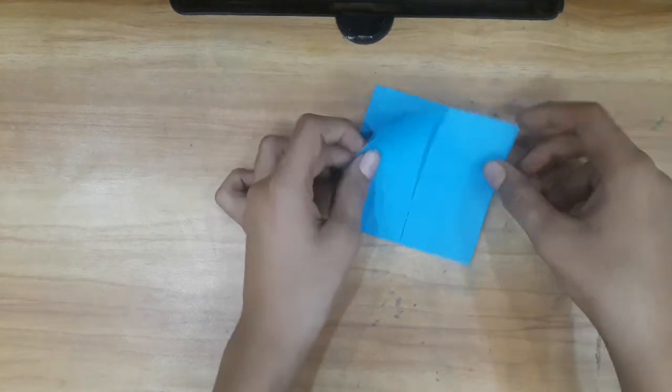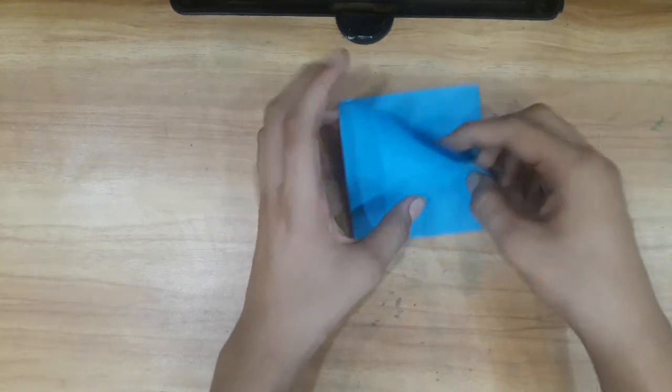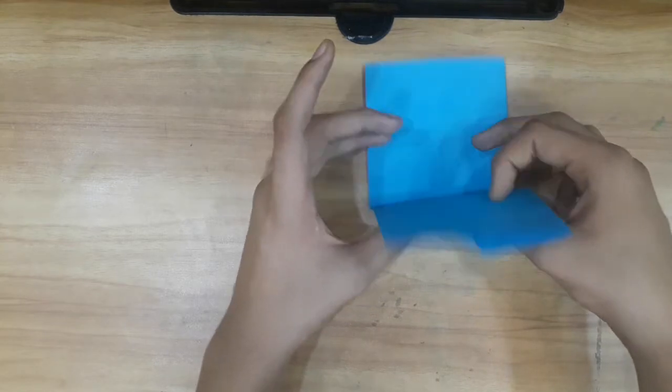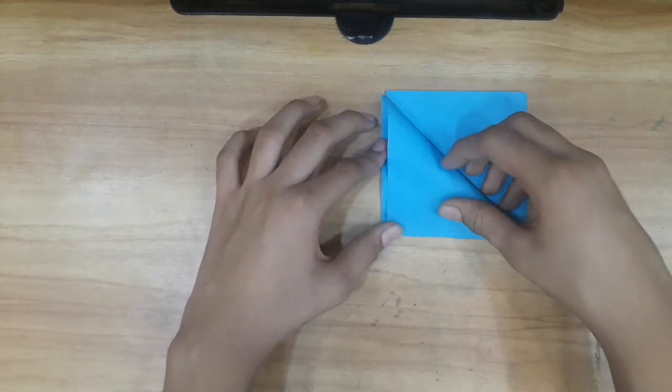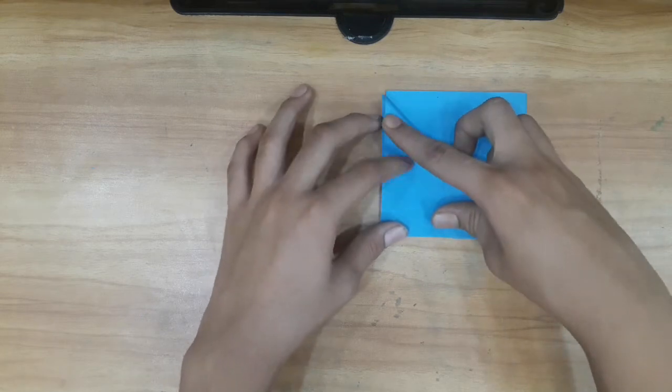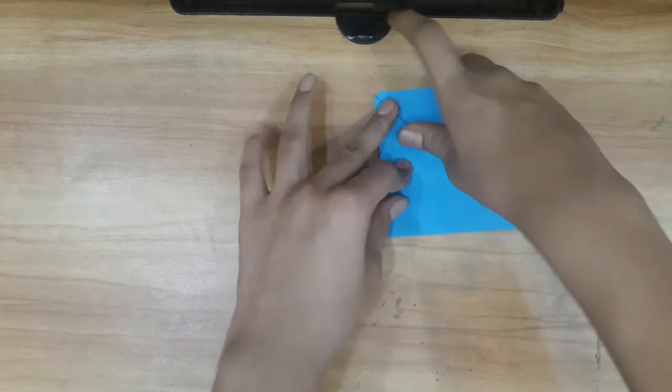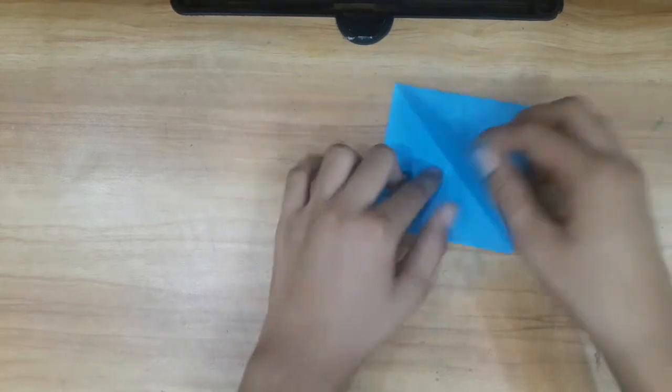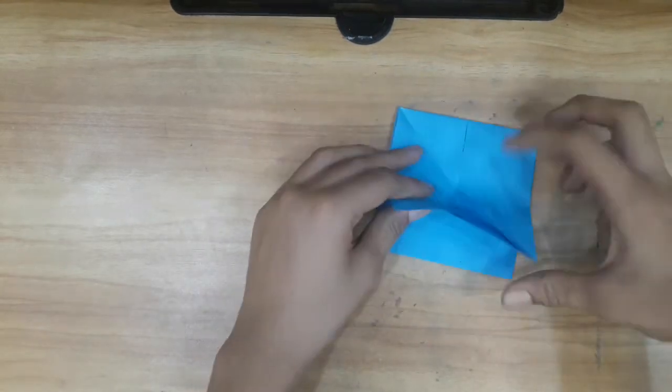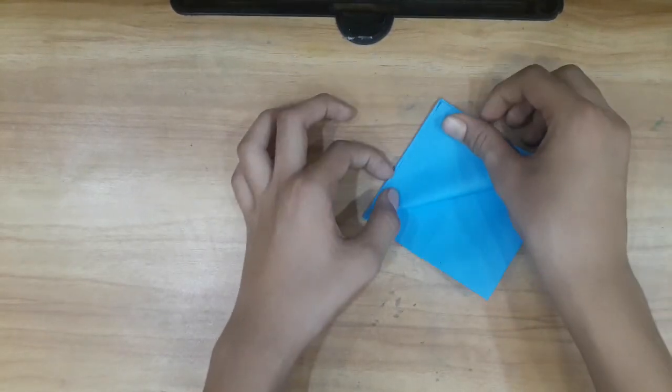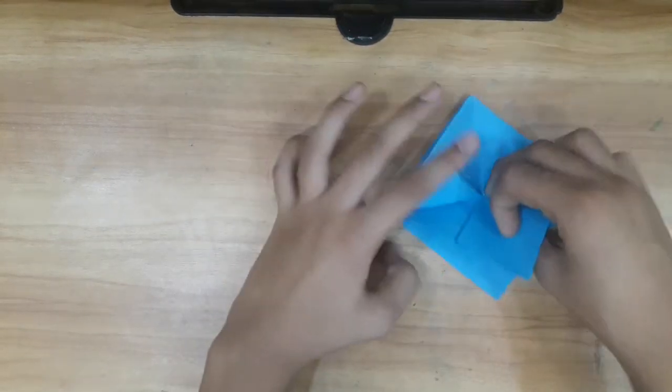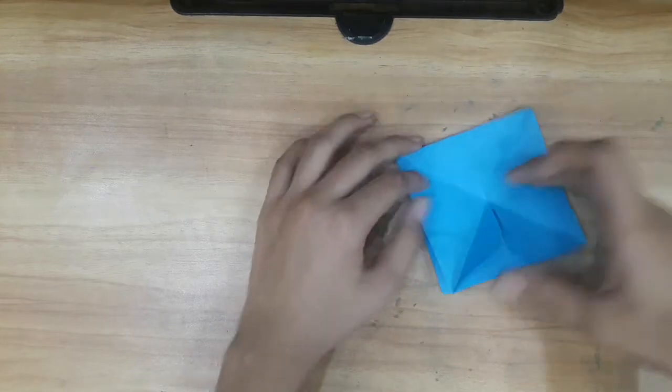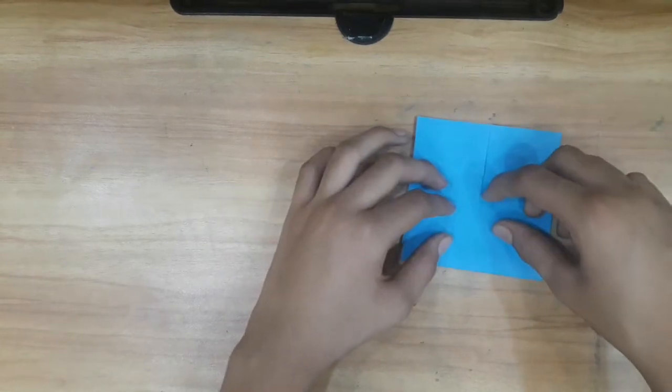So guys, you can see that there is one side open, so we have to flip it and make a triangle here like this. Now we have to do exactly the same on this side also.